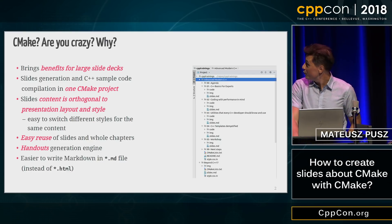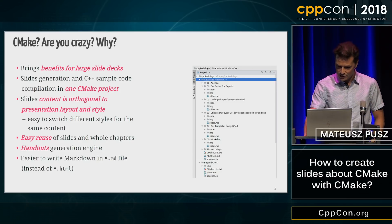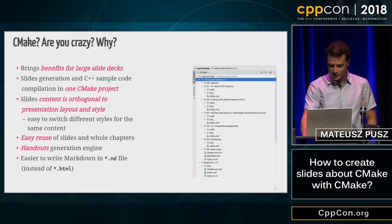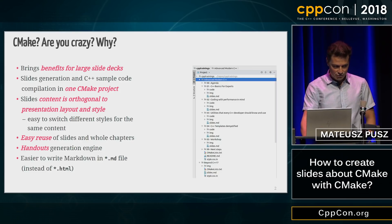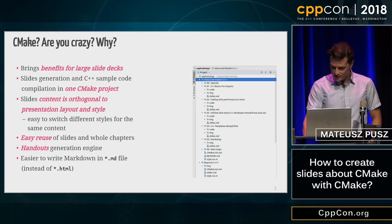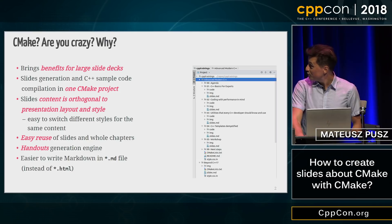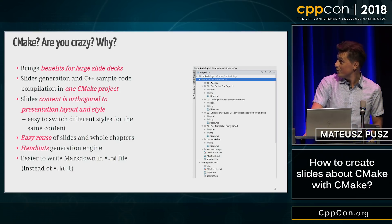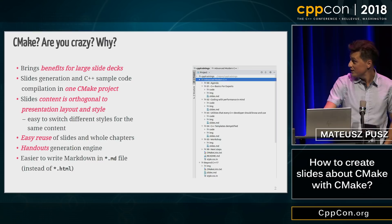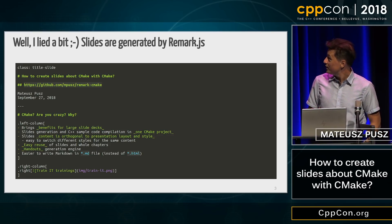You can build everything with one CMake. The content is orthogonal to the presentation layout and style, so you can easily change styles for different occasions. There is easy reuse of content because you just copy-paste text in Markdown. There is a special option to generate handouts, which I'll show at the end, and I prefer to write Markdown in MD files rather than in HTML.